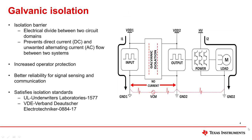Galvanic isolation uses an electrical divide to inhibit unintentional current flow between two circuit domains. The barrier prevents unwanted DC and AC flow between two systems without compromising functionality and signal processing. This method helps to protect operators from high voltages, and also helps with reliability for signal sensing and communication, where the high-voltage portion does not damage the low-voltage portion. TI offers solutions satisfying isolation standards such as UL1577 and VDE088417 to support customer and system needs.